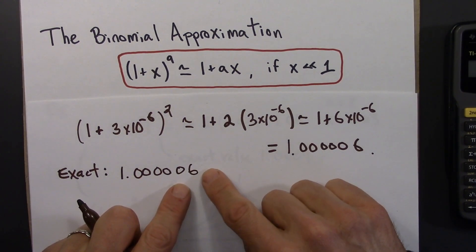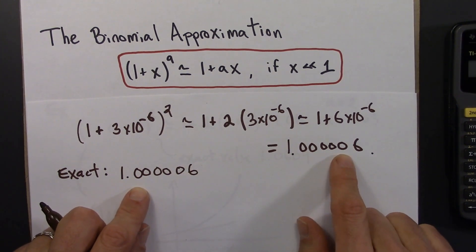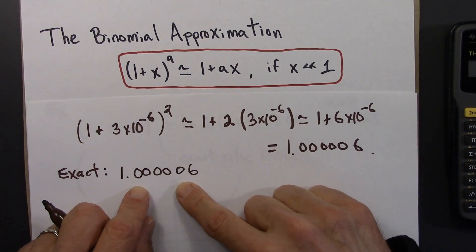So there probably are a couple, there may be a couple extra digits here, but basically the idea is that the calculator can't tell the difference between these two, between this approximate form and the exact form.